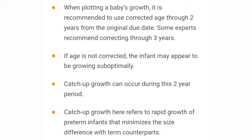When plotting a baby's growth, it is important to use corrected age through two years from the original due date. For preterm babies, we use corrected age up to two years — some recommend up to three years. Corrected age is the total chronological age minus the number of weeks/months born before term. If age is not corrected, the infant may appear to be growing sub-optimally. Most catch-up growth in premature infants occurs within two years.